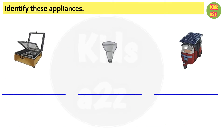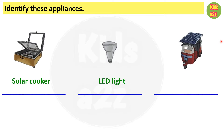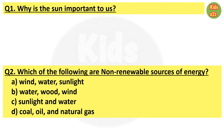Here in this worksheet, kids need to identify these appliances and write their names. Under the first picture they need to write solar cooker, the second picture is of a LED light, and the third picture is a solar powered auto rickshaw. Now question and answers — First question: Why is the sun important to us?